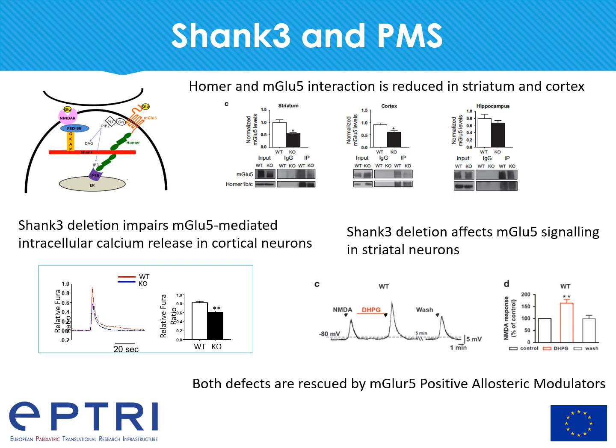When we analyzed calcium release mediated by mGLU5 by specifically activating the receptor with DHPG, we found in cortical neurons a significant reduction in calcium release compared with wild-type neurons.